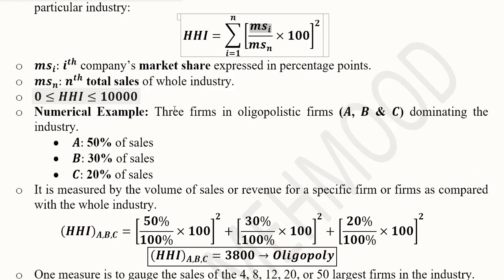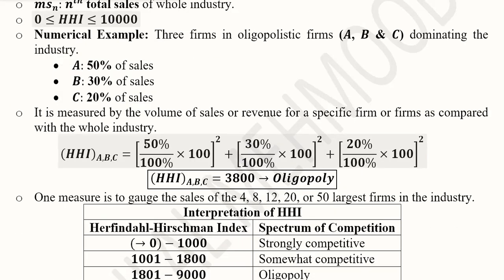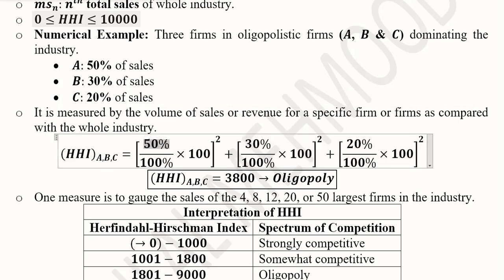Consider an oligopoly example with three firms: A has 50% of sales, B has 30%, and C has 20%. Applying the formula — squaring each firm's share and summing them — gives an HHI of 3,800. This value falls within the oligopoly range, as we can verify by referring to the range table.